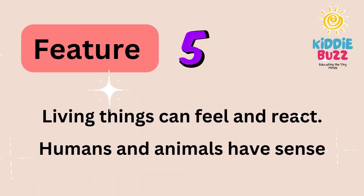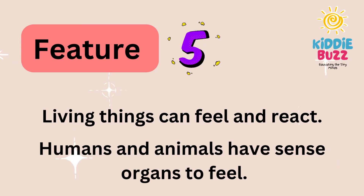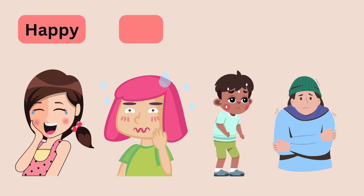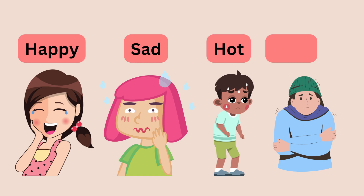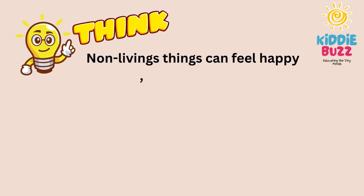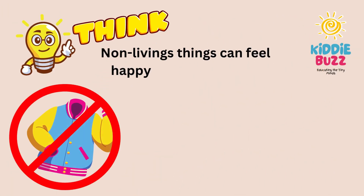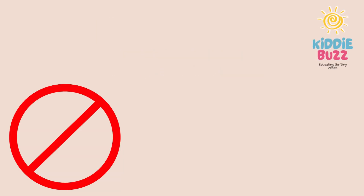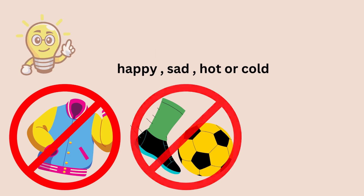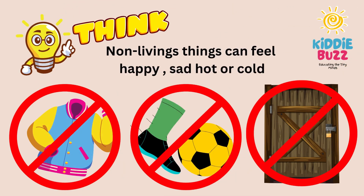Let's look at another feature — living things can feel and react. Humans and animals have sense organs to feel. For example, human beings can feel happy, sad, hot, and cold. Plants can also feel the sunlight and react by moving towards the sun. Just think, can non-living things feel happy, sad, hot, or cold? The answer is no. The jacket does not feel cold when we wear it in winter. Similarly, a ball will not cry when we kick it. A door doesn't feel sad when we lock it. So these are all non-living things — they cannot feel.